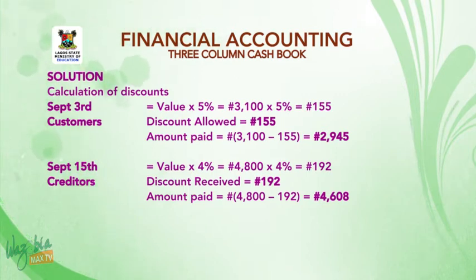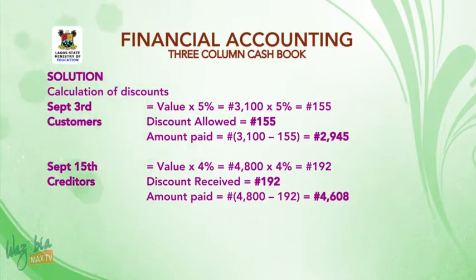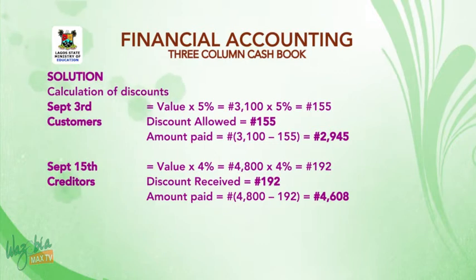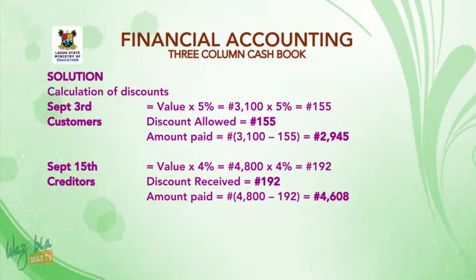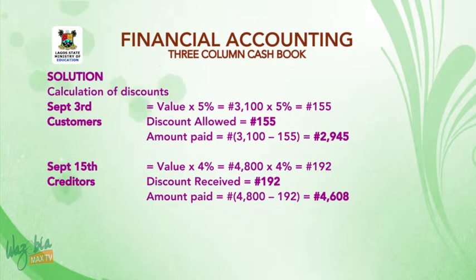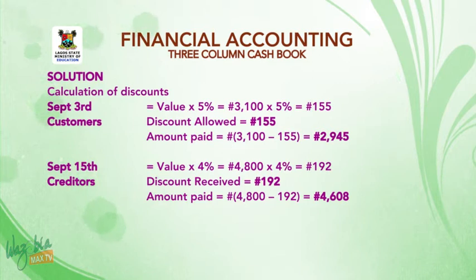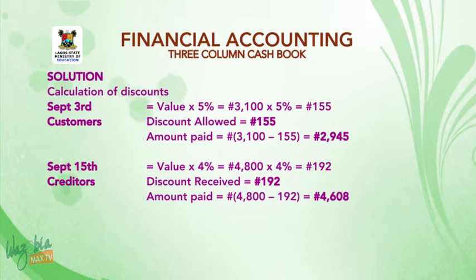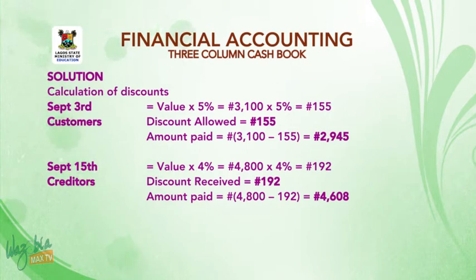On September 15th, we paid creditors — that is our supplier — by check, less 4% discount. The calculation is: $4,800 multiplied by 4/100, which gives us $192. So the discount we receive from our supplier is $192. The amount we pay him is $4,800 minus $192, which gives us $4,608. So we pay him $4,608 and receive a discount of $192 from him.